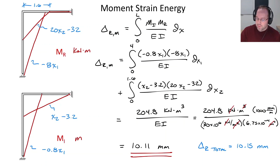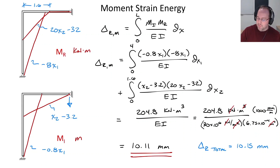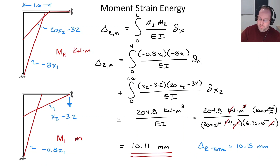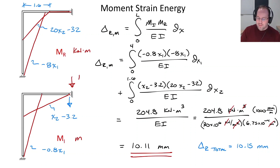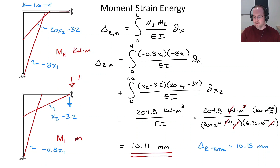That displacement acts downward at location C. We know the direction because the total displacement is positive and the unit load was applied downward — a positive result means the displacement is in the same direction as the applied unit load. That wraps up the principle of virtual work for beams and frames. I hope you learned something — please subscribe and I'll see you next time.